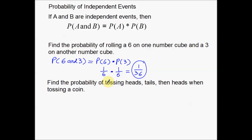Next example: find the probability of tossing heads, tails, and then heads when tossing a coin. It looks like we are tossing this coin three times. When you toss heads or tails, they don't really have anything to do with one another. If you toss heads the first time, that has no bearing on what you toss the second time around. So again, these are independent of one another — heads, tails, heads don't have anything to do with one another.